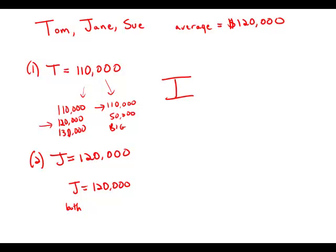Either both others are at $120,000, or what's going to happen is for every amount that one of them is below, say by some amount L, the other would have to be above by that same amount L.